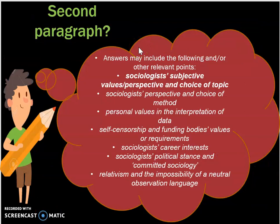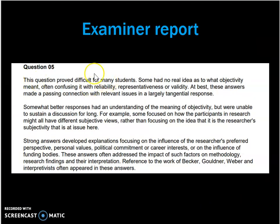For the second paragraph, here are some prompts from the mark scheme of paper 3 2019 so you can have a go at writing one yourself following the structure just covered. A tip: the student's paragraph discussed the methods chosen by interpretivists and why they were not objective. Looking at the examiner report, this question proved quite difficult for some students. Better responses showed an understanding of objectivity, and stronger answers focused on the influence of researchers' preferred perspective and the impact of factors on methodology.